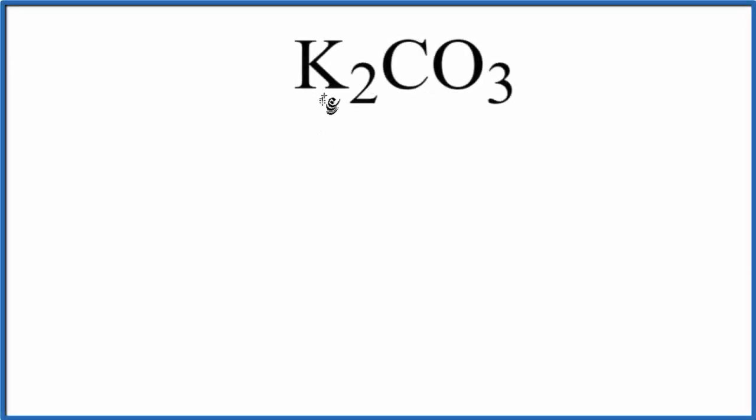In this video, we'll find the number of atoms in K2CO3. This is potassium carbonate. Let's write the element symbols down first. K, that's potassium. C, carbon, and then O, that's our oxygen.